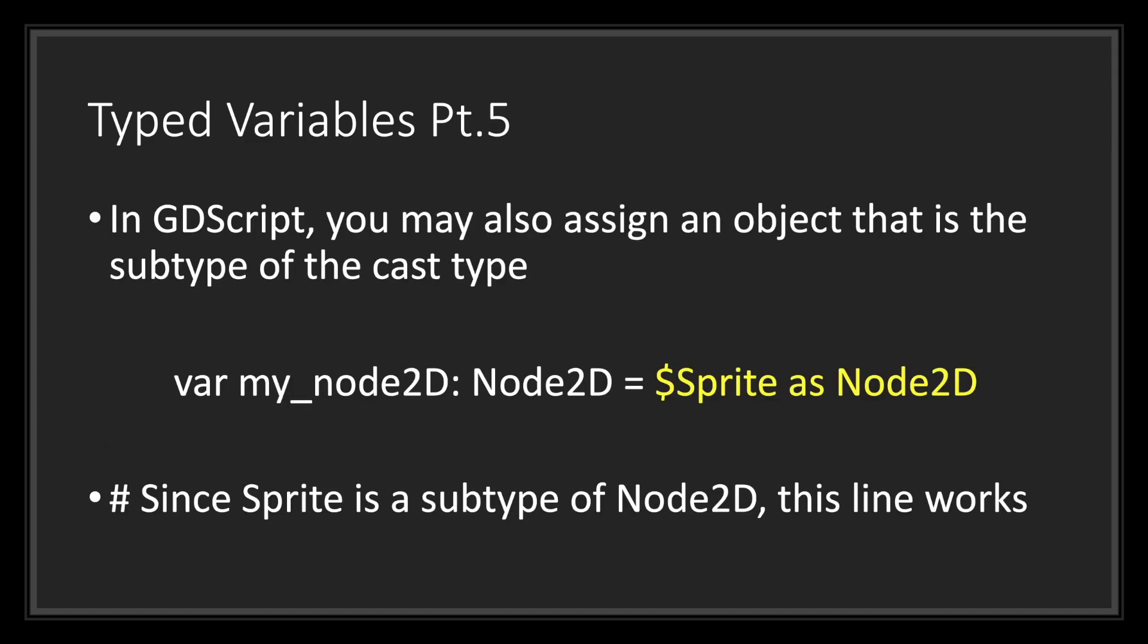In GDScript, you may also assign an object that is the subtype of the cast type. Let's take a look at this example. In this example, we have a variable my node 2d and it has the type of node 2d and we have assigned it a sprite. Normally, assigning a sprite to a variable with the cast type node 2d will throw an error. However, since sprite is a subtype of node 2d, we can use the casting operator as to convert our sprite into node 2d.